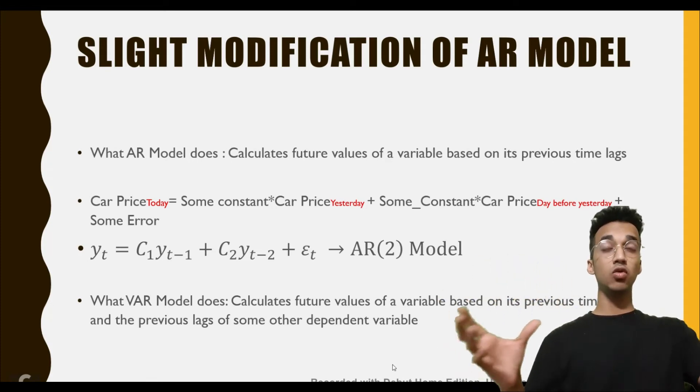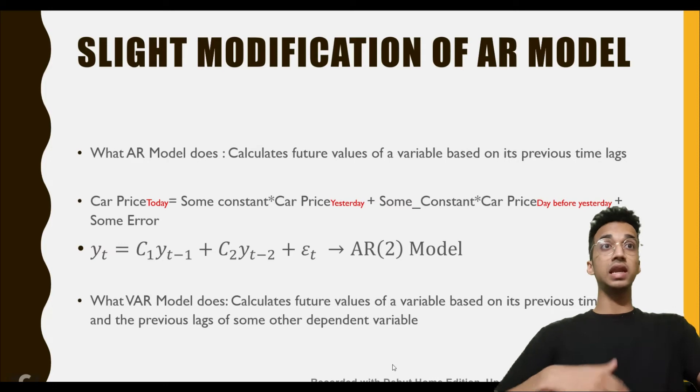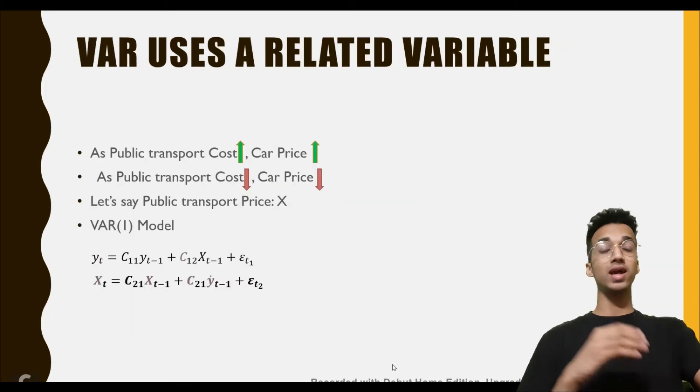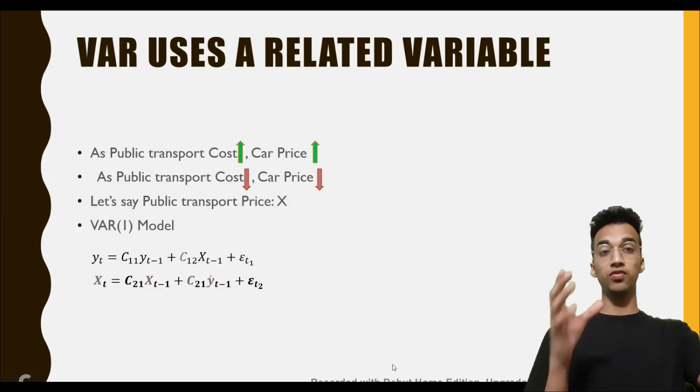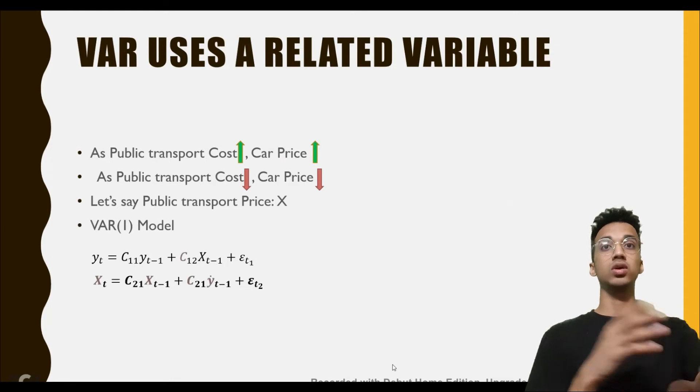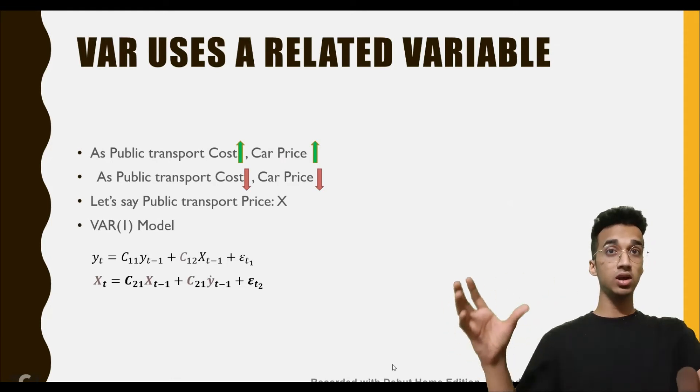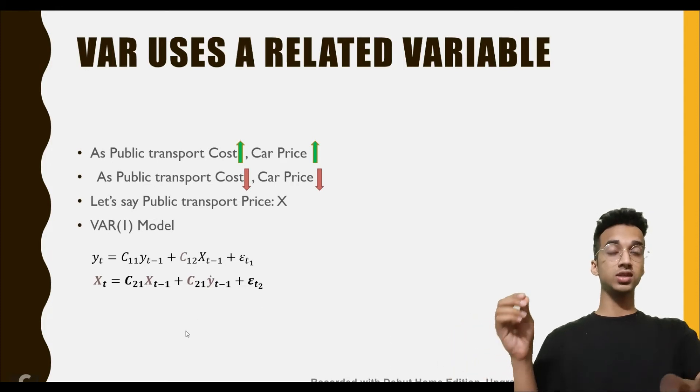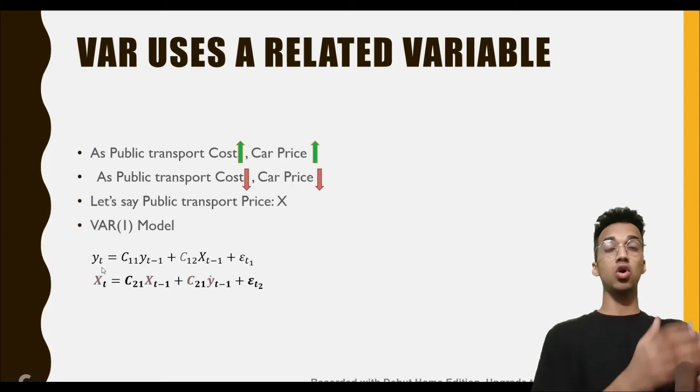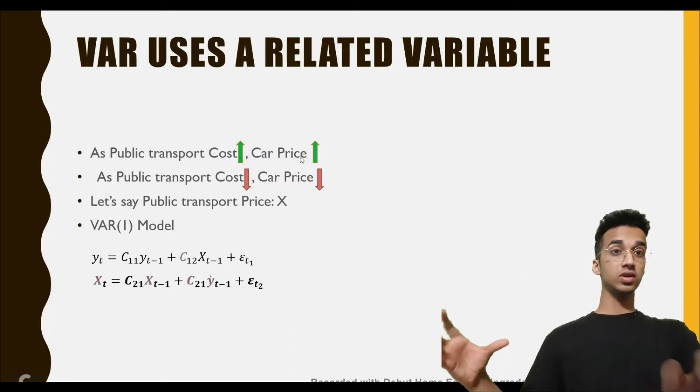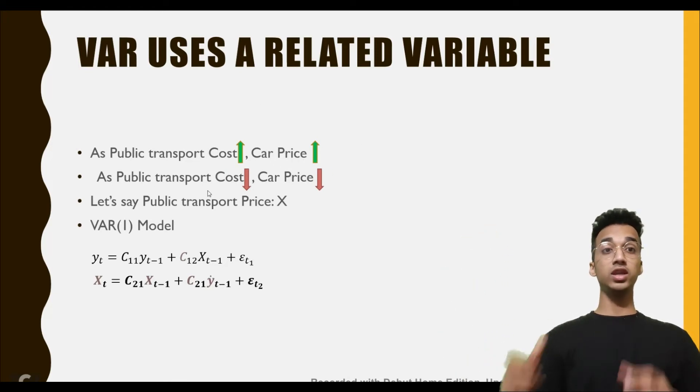Vector autoregression uses a related variable, which is also called an exogenous variable—a variable which is outside the current system. In this case, the public transport cost variable. As the public transport cost is increasing, car price also goes up because more people are trying to buy cars. So if you have the data of all the public transport cost, you can use that to make a better prediction of car prices.